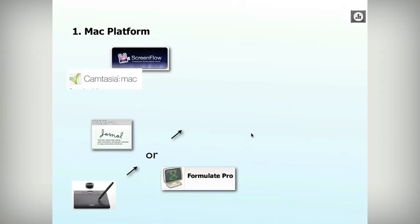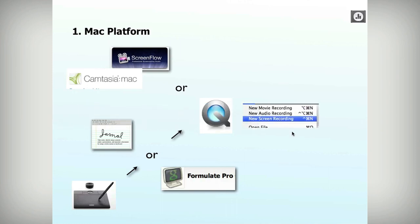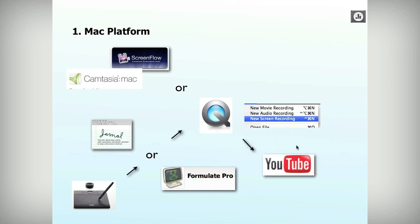I would use one of two things for screencast software because I want the editing environment: ScreenFlow or Camtasia Mac, though ScreenFlow is really where it's at right now. Or QuickTime. Throw the recording directly into YouTube, use a Google Form to track, and use a Google site to publish everything if you don't have your own website — that's what I'd recommend.